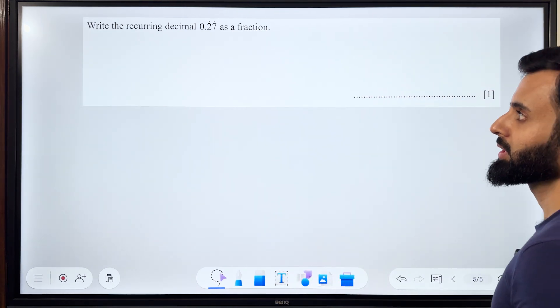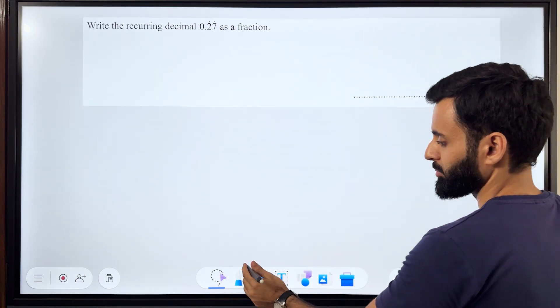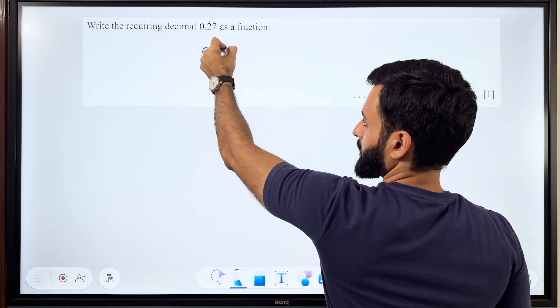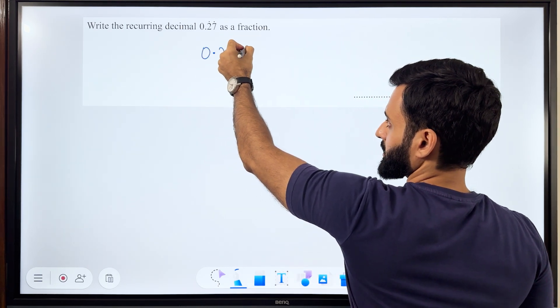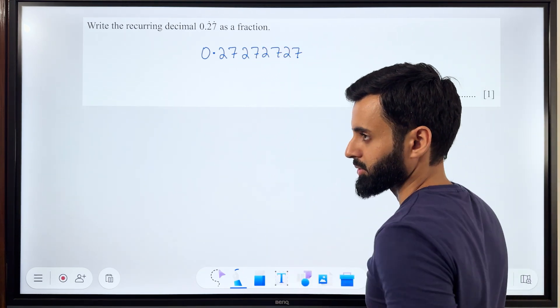Write the recurring decimal 0.27 as a fraction. Notice that there is a dot on 2 and a dot on 7. What does that mean? That means the recurring pattern or repeating pattern looks like this: 2, 7, 2, 7, 2, 7 and the same pattern continues.